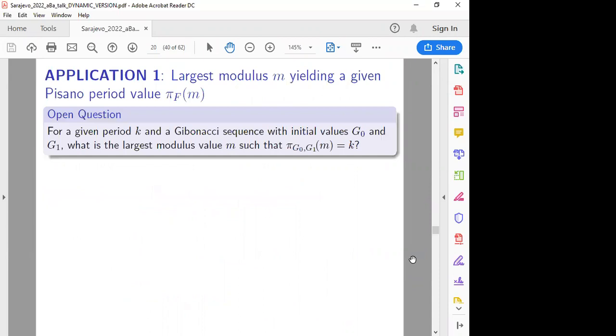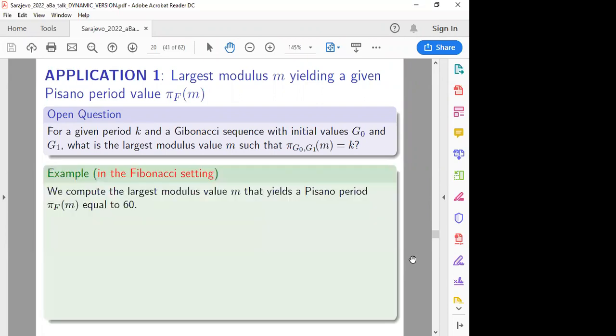Okay. So applications. The largest modules M yielding a given basal period pi sub f of M. So an open question for anyone who wants to do this. This is a good question to think about. For a given period K and a given Nazi sequence with fixed initial values G0 and G1, what is the largest modules value M that has that given value K as its generalized basal period? That's a really good, fun question. And maybe you want to solve it after you see how we get it in the Fibonacci case. Let me give an example in Fibonacci case.